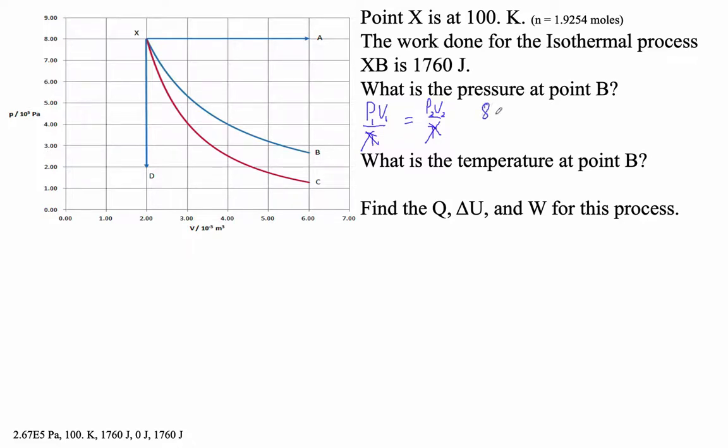So we go 8 E5. That's here, that's our initial one. Times 2 times 10 to the minus 3rd. Equals, let's see, pressure 2. That's what we're trying to find. And the volume is 6 E minus 3. So we're good here.